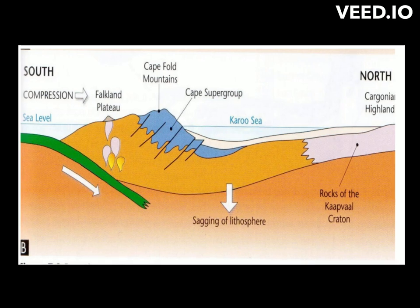During that process, the oceanic crust was subducted, creating volcanoes which served as the source of sediments within the retroarc foreland basin named the Karoo Sea. On the other hand, the crust was folded and pushed upward due to extensive pressure, forming fold mountains which also provided the major source of sediments during the Ecca times.